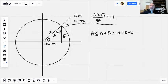Which means that the area a is equal to one half of the cosine of theta times the sine of theta.